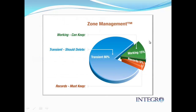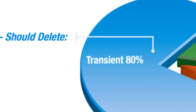There are three types of email in every organization. The vast majority is transient content — those famous meeting notices and the like — that don't need to be kept long term. They should be deleted in a short amount of time, recommended at about 90 or 120 days.